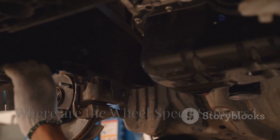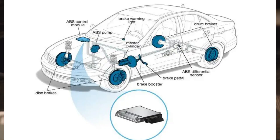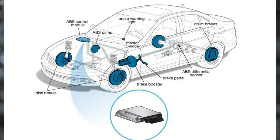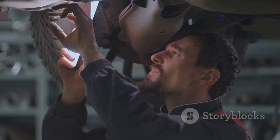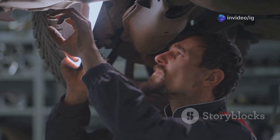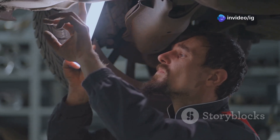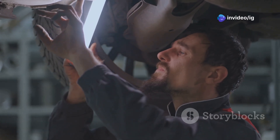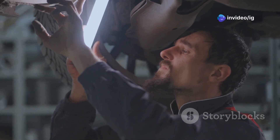The wheel speed sensors are especially important for ABS-related issues — each wheel has its own sensor located right near the brake rotor. A quick tip: a faulty vehicle speed sensor, or VSS, can lead to erratic speed readings and even transmission issues, especially if you drive an automatic car.